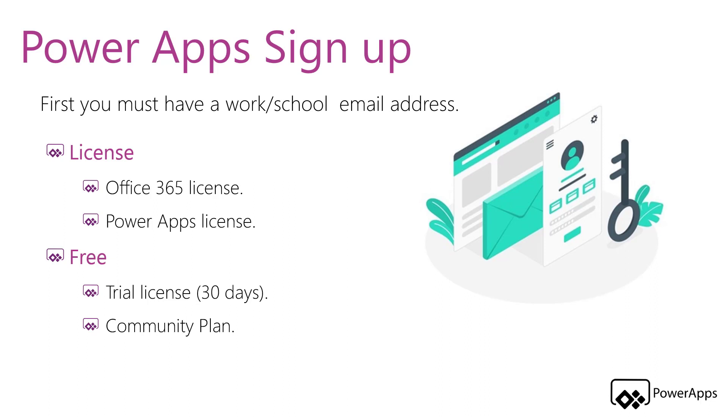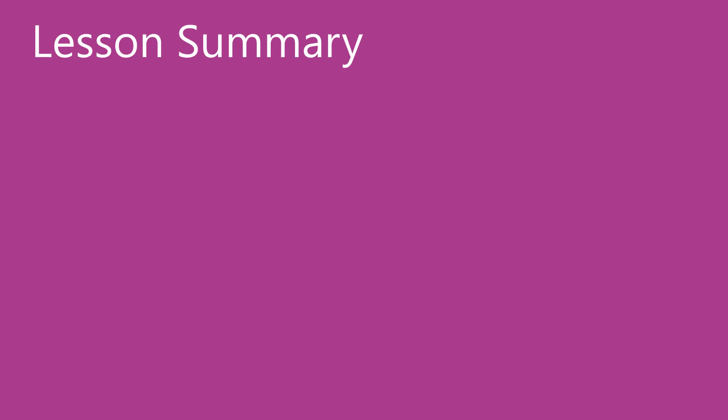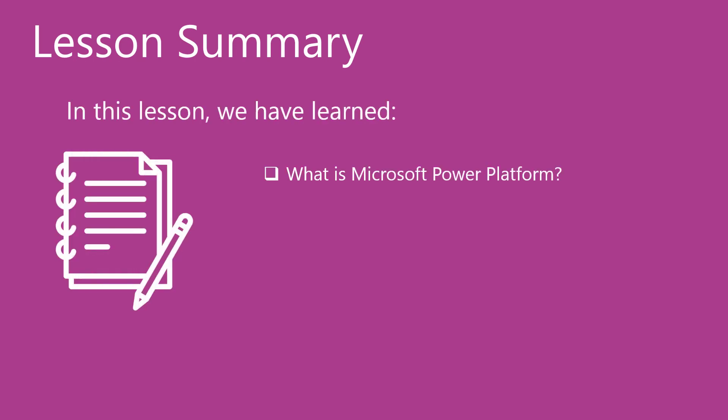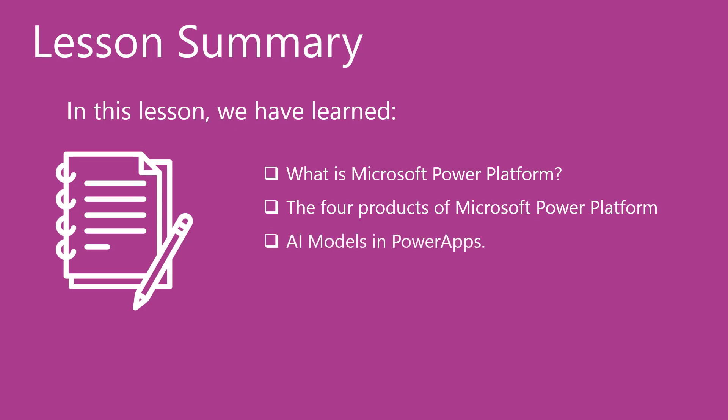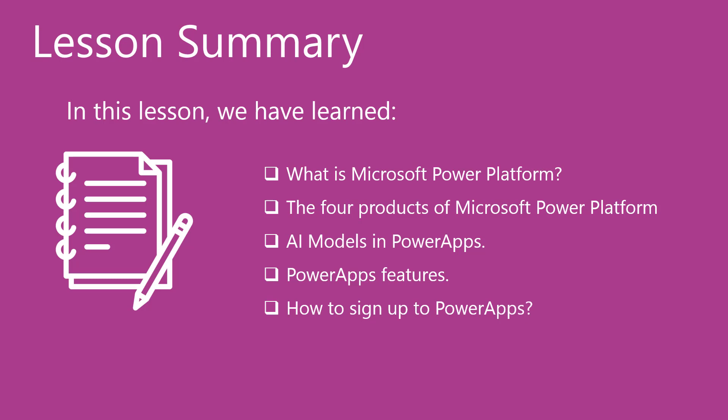This is the second option for the free license. Now we have reached the end of lesson one. In this lesson, we have learned what is Microsoft Power Platform and the four products or components of Power Platform. We had an overview about the AI capabilities used in Power Apps, and we know the main features that lead us to use Power Apps. At the end, we know the different ways to sign up for Power Apps. Next, we will have a demo to sign up for Power Apps. Thanks.